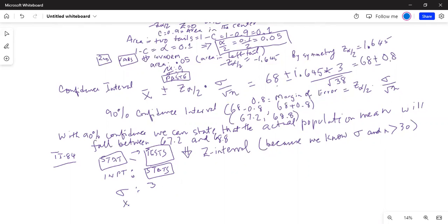What is my x bar? My x bar is 68. Type in 68. What is my n? My n, type in 38. Sample size is 38. My c level, confidence level is 0.9. Type in 0.9. And then you go to calculate. At the bottom is calculate, and hit enter.